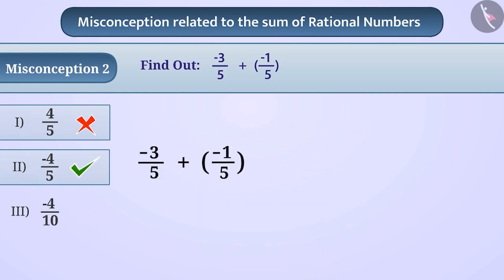Some children add the numerators while doing addition, getting minus 3 plus minus 1 equals minus 4. Similarly, by adding denominators, they get 5 plus 5 equals 10 as the result.